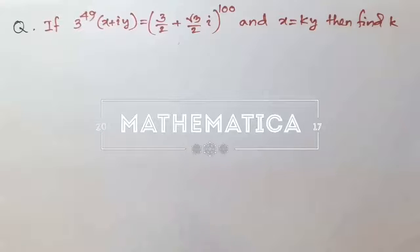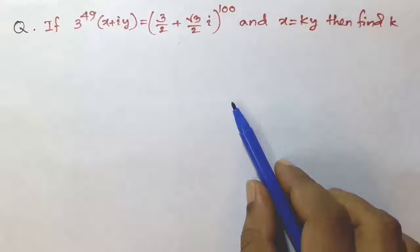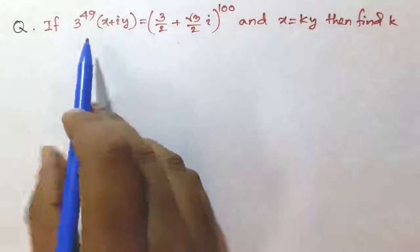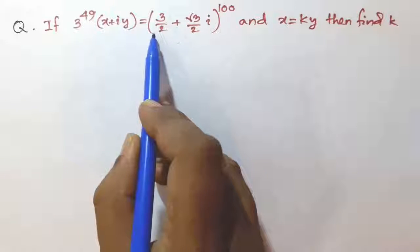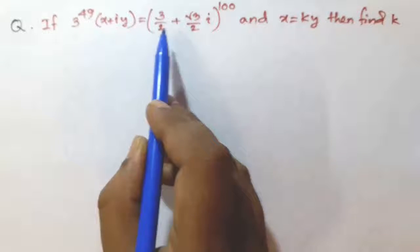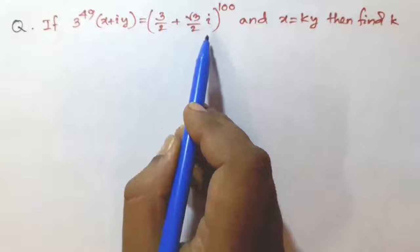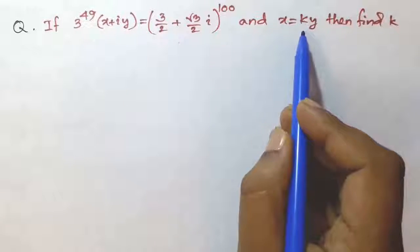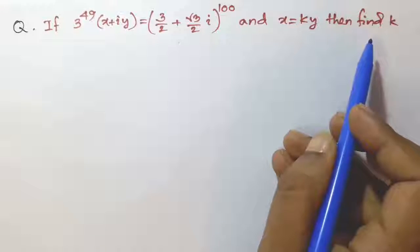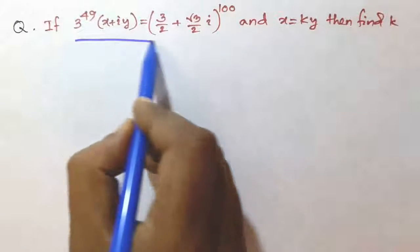Dear friends, this problem is also related with cube roots of unity. If 3 to the power 49 into x plus iy is equal to 3 by 2 plus root 3 divided by 2 i, whole to the power 100, and x is equal to ky, then find k. We shall start with this one.